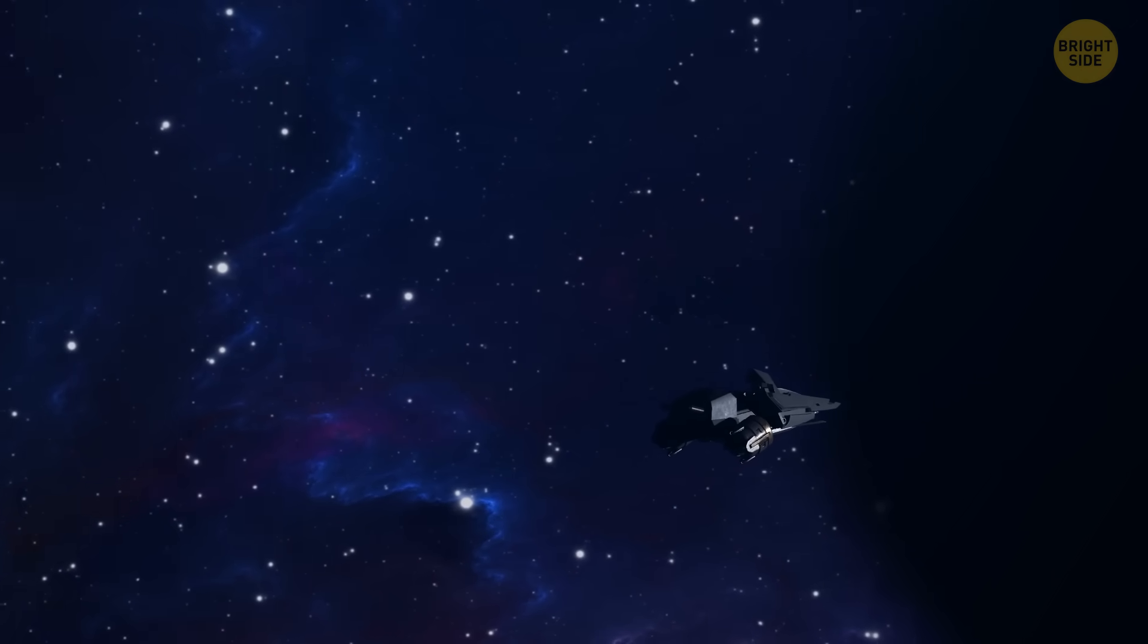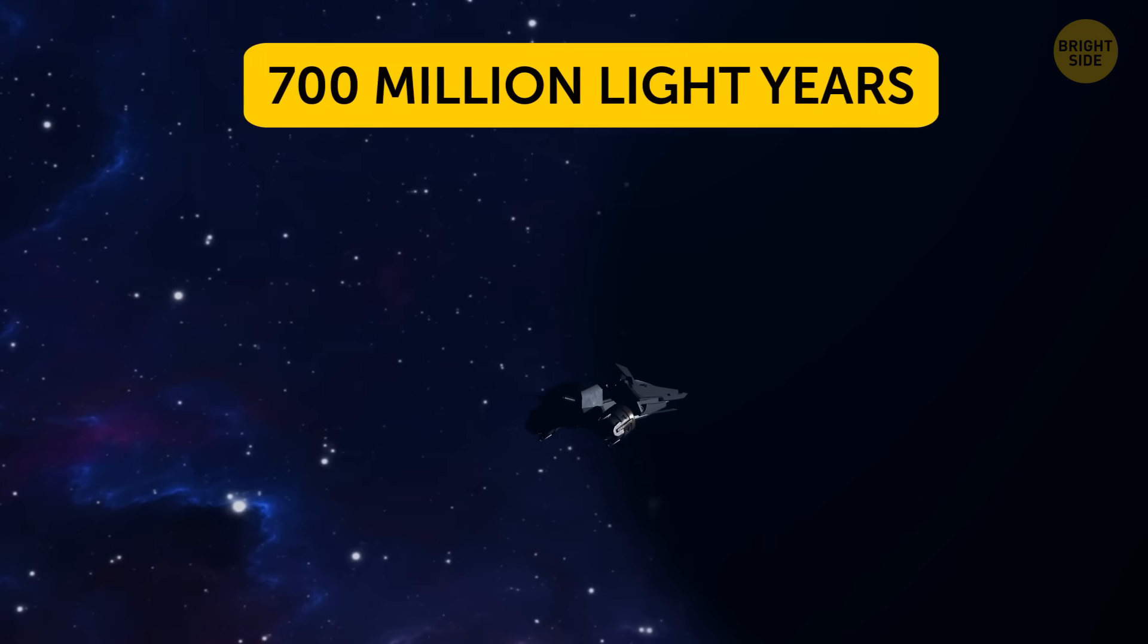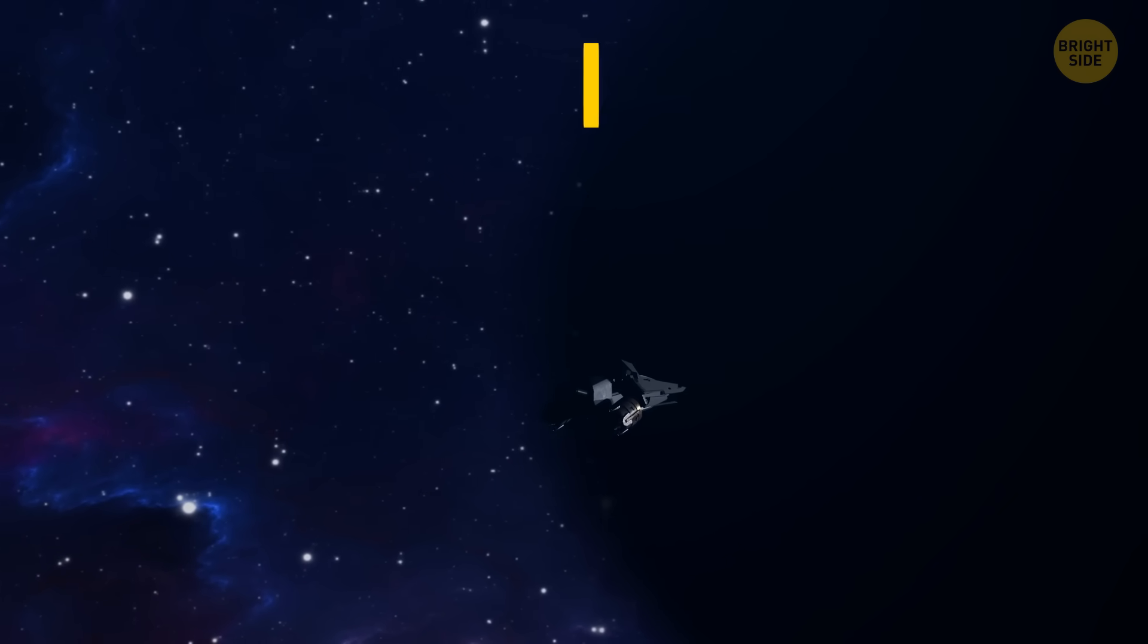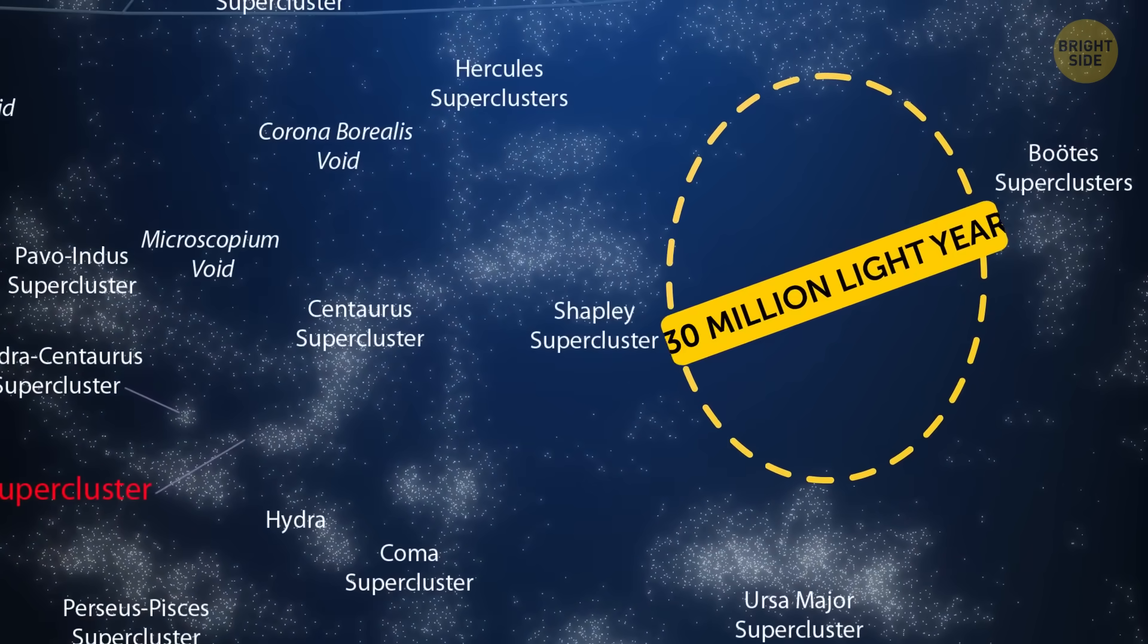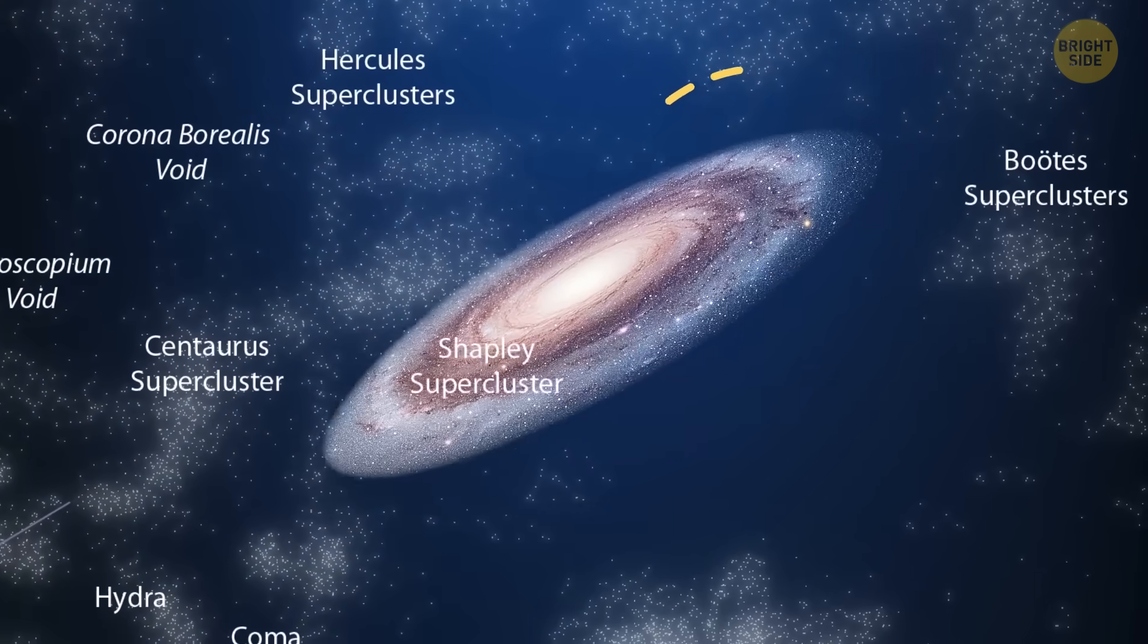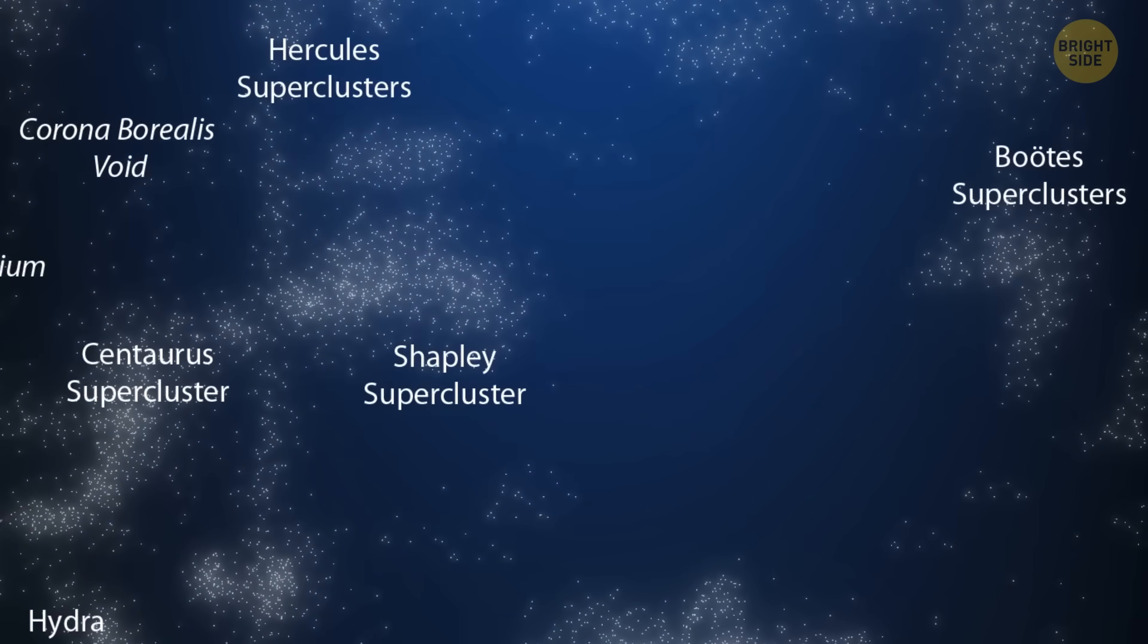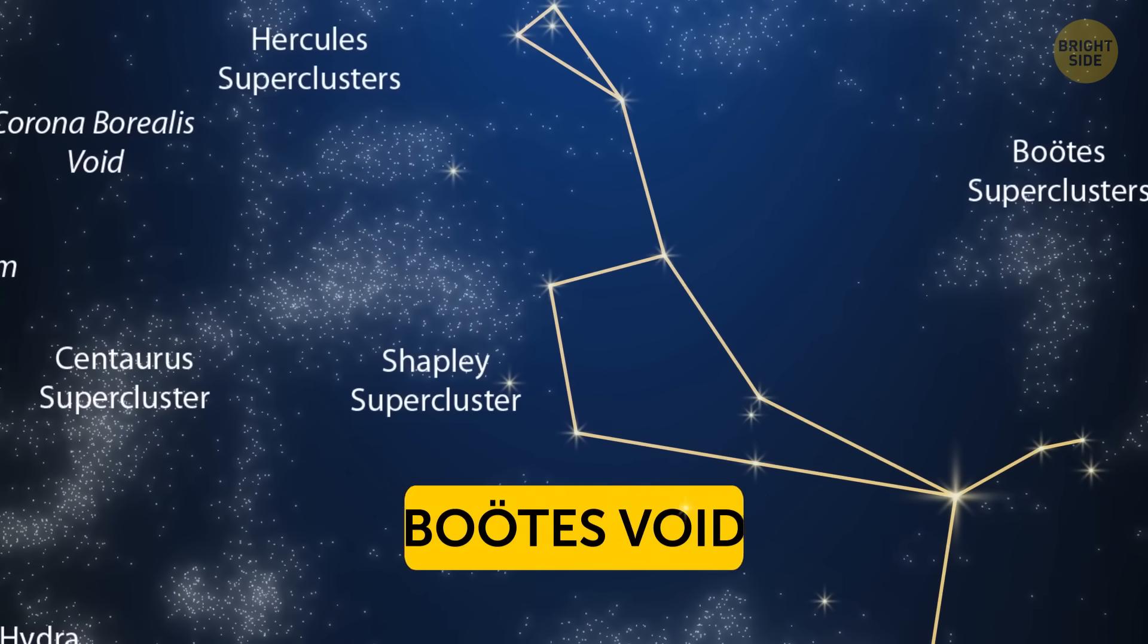It looks like… nothing. At a distance of 700 million light-years away from Earth, there's a hole, a blank void that has very few galaxies. This is a roughly spherical region about 330 million light-years across. Our home Milky Way galaxy could fit there thousands of times over. It's the mysterious Bodhi's void in the constellation of Bodhi's.